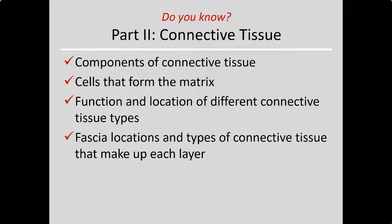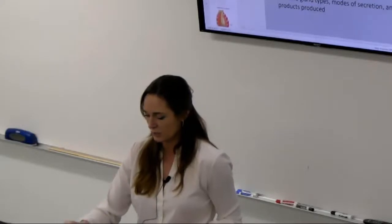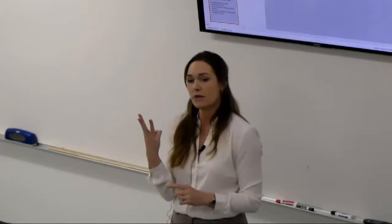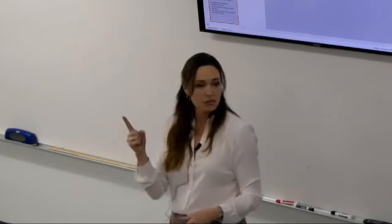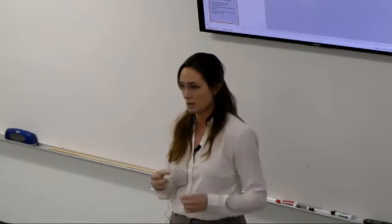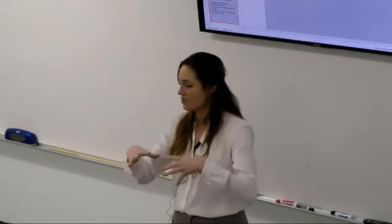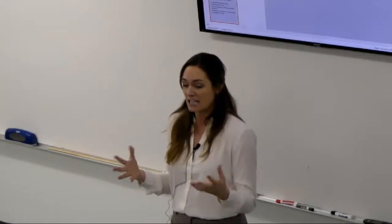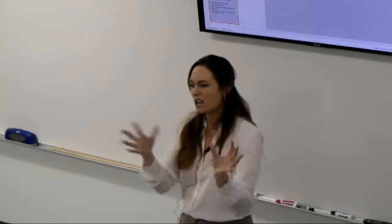For connective tissue, the three main components are: fibers, ground substance, and cells. Ground substance is like the gelatinous medium — it can be stiff like cartilage or watery like blood — and it's the medium that cells and fibers exist within. The three fiber types are collagen, reticular, and elastin.